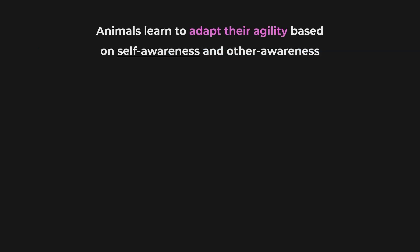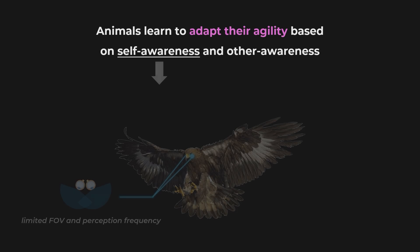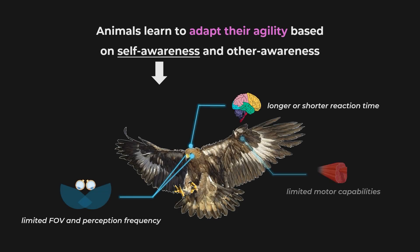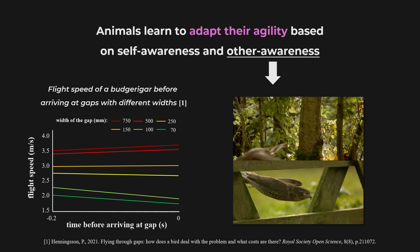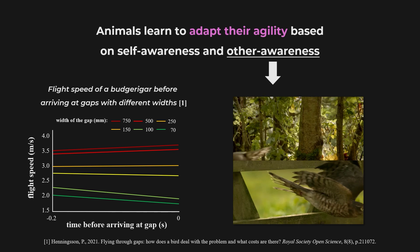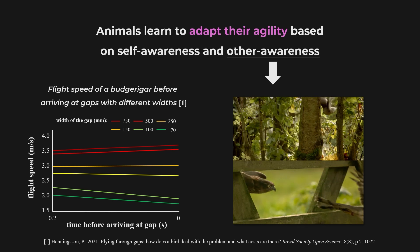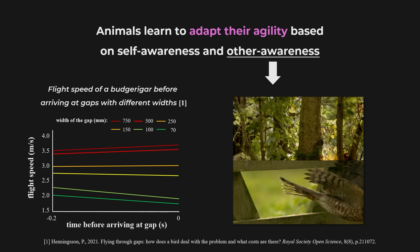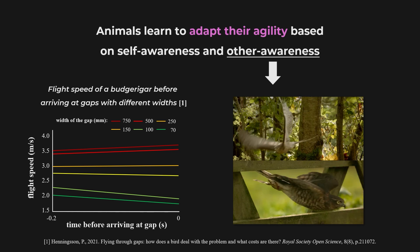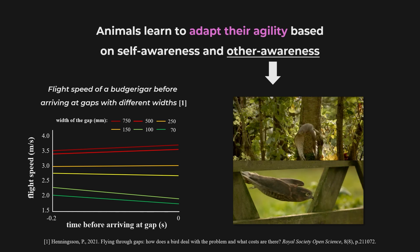Animals learn to adapt their agility based on self-awareness — for example, of their limited capabilities including perception, reaction, and motor control — and awareness of their observed environments. As observed by previous research, budgerigars fly at a low speed to ensure collision-free crossing of narrow gaps.